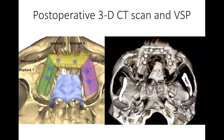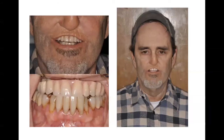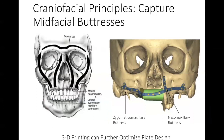A postoperative image along with the virtual surgical plan shows how six dental implants demonstrate how reliably and accurately the plan can be followed, as shown on the CT scan. A clinical panorex and clinical photo of the patient show that while his upper lip is short from previous radiation, he has a retained dental prosthesis and is able to eat hard foods without any instability. With this 3D printing technology, we can also leverage traditional craniofacial principles taught by legendary figures like Paul Manson.